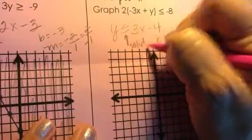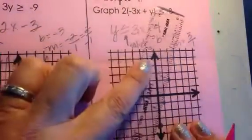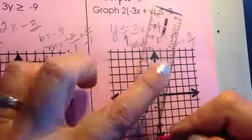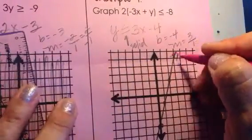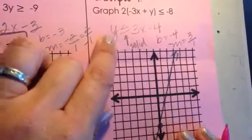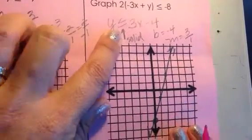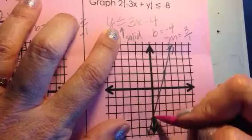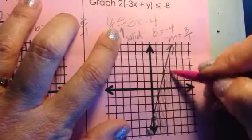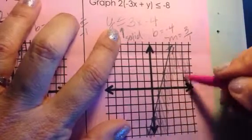Again, I'm dealing with a solid line. If you see how these examples are, there was two dashed boundary lines up top. Now, two solid. And then, we have y is going to be less than or equal to 3x minus 4. So, I'm going to shade underneath where that y-intercept of negative 4 was.